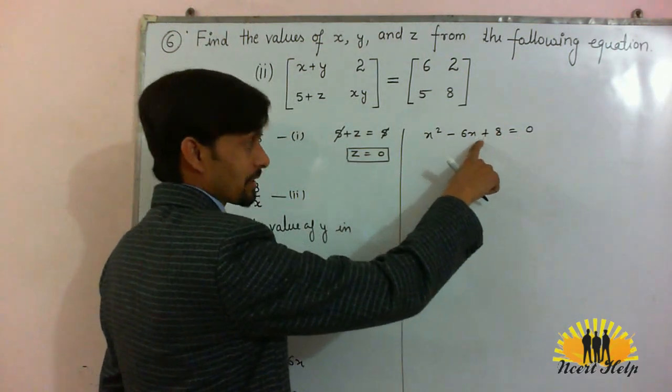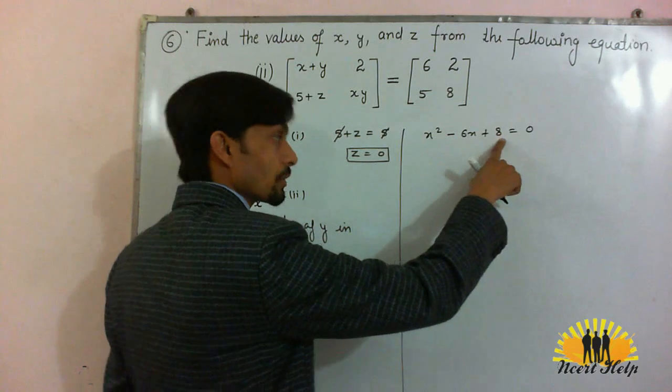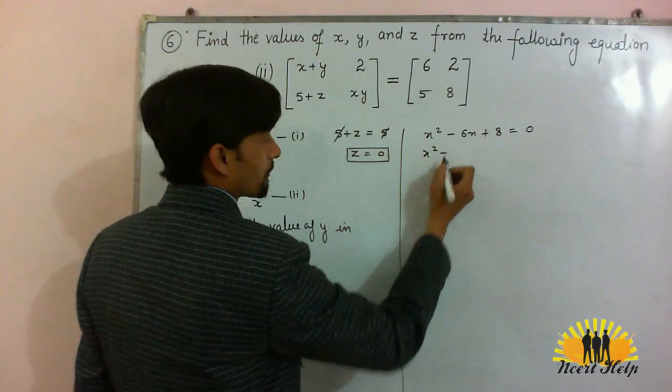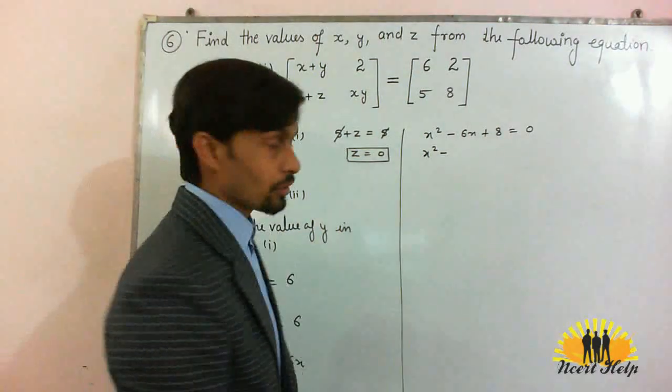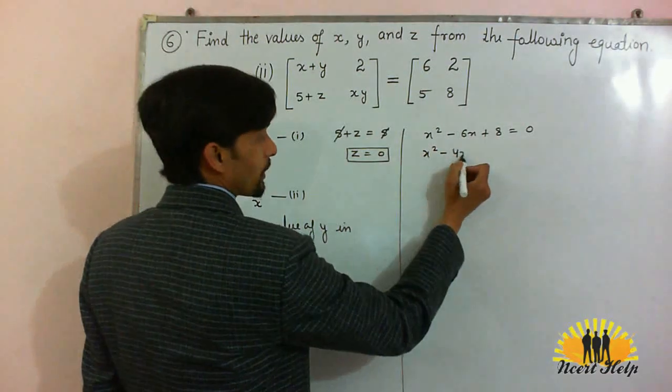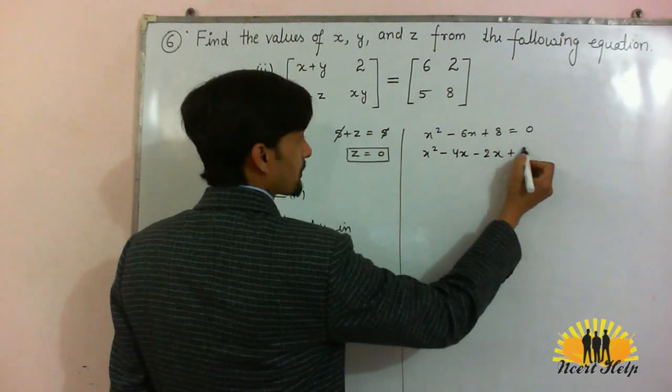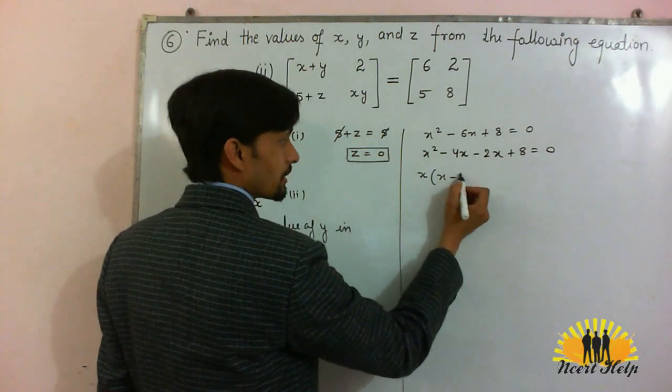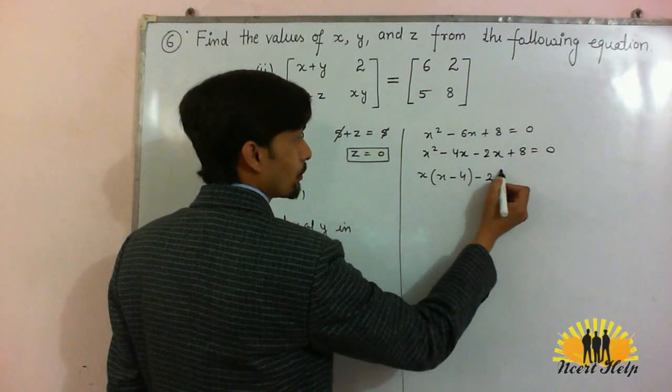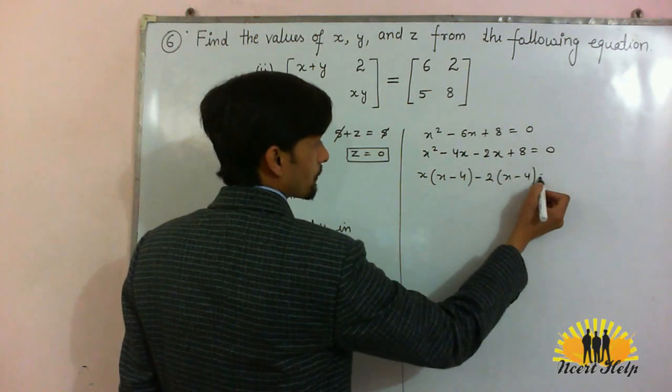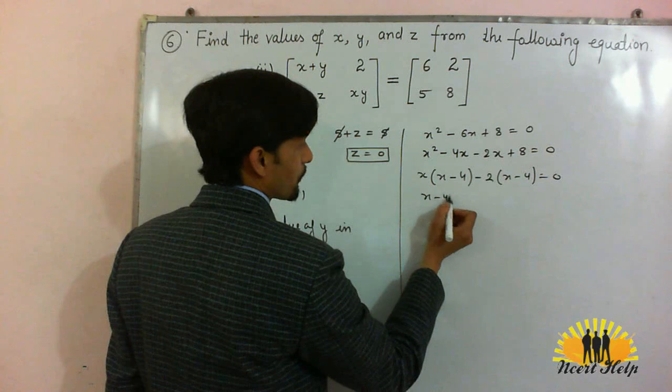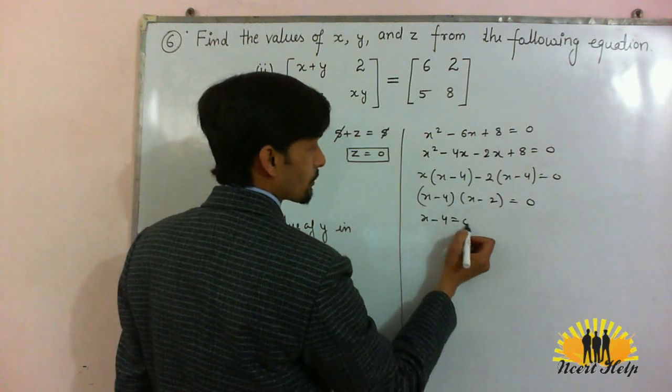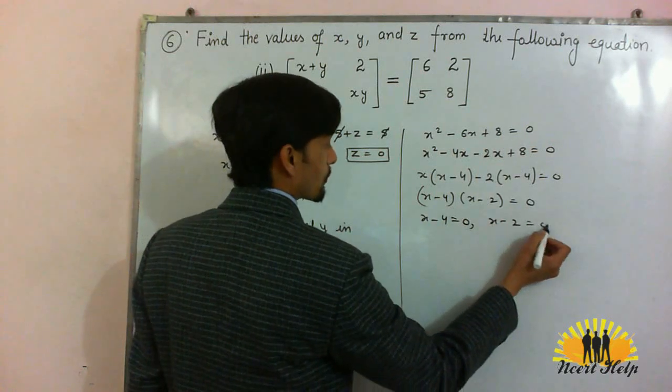Here it is 8 and this is plus sign. We have to find two factors of 8 whose sum is 6. That will be 4 and 2. So x square minus 4x minus 2x plus 8 is equal to 0. Take common x: x minus 4 minus 2, x minus 4 equal to 0, x minus 2, x minus 4 equal to 0.